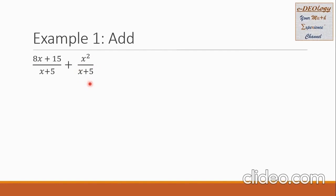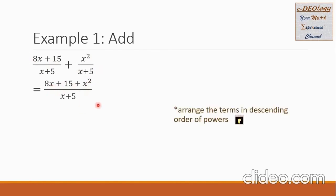We can see that our denominators are common, so we can add the numerators. So we have now 8x plus 15 plus the second numerator x squared, all over the common denominator x plus 5. Let us arrange our numerator in descending order of powers — x squared comes first, followed by 8x plus 15. In the denominator, it will be just x plus 5.